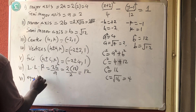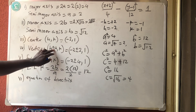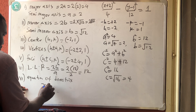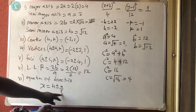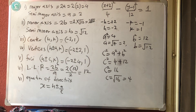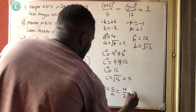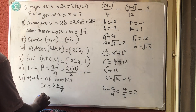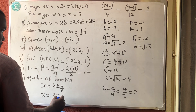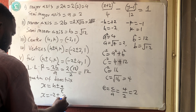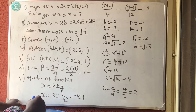The equation of the directrix: the eccentricity e = c/a = 4/2 = 2. The directrix is x = h ± a/e, so x = −2 ± 2/2 = −2 ± 1, giving x = −1 and x = −3.